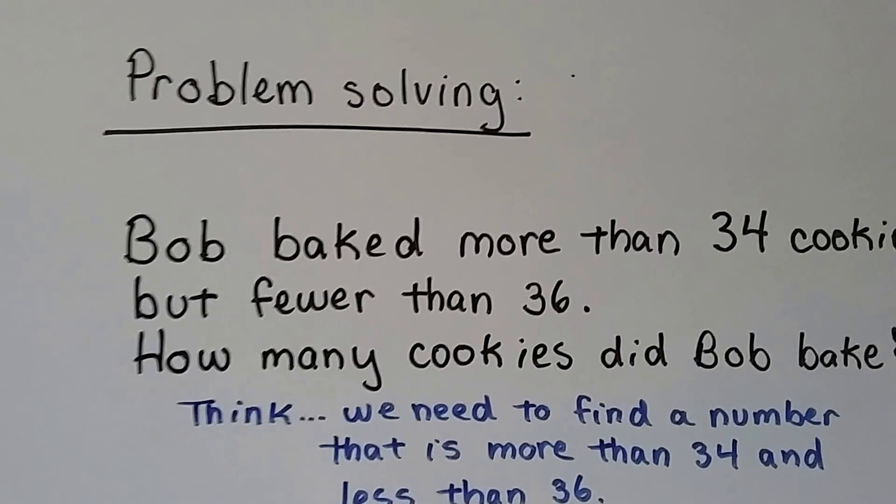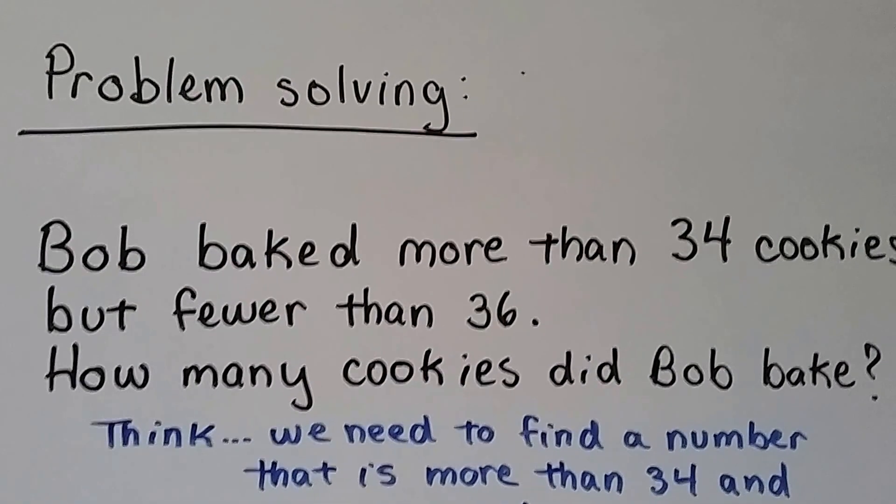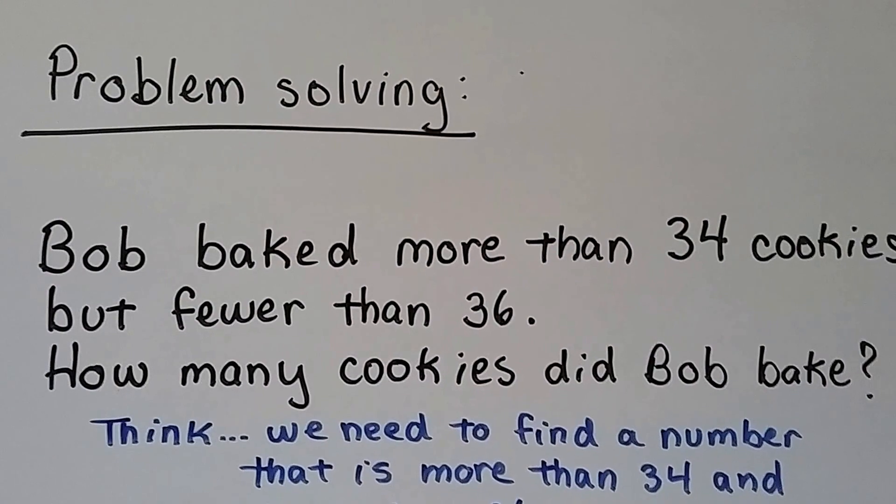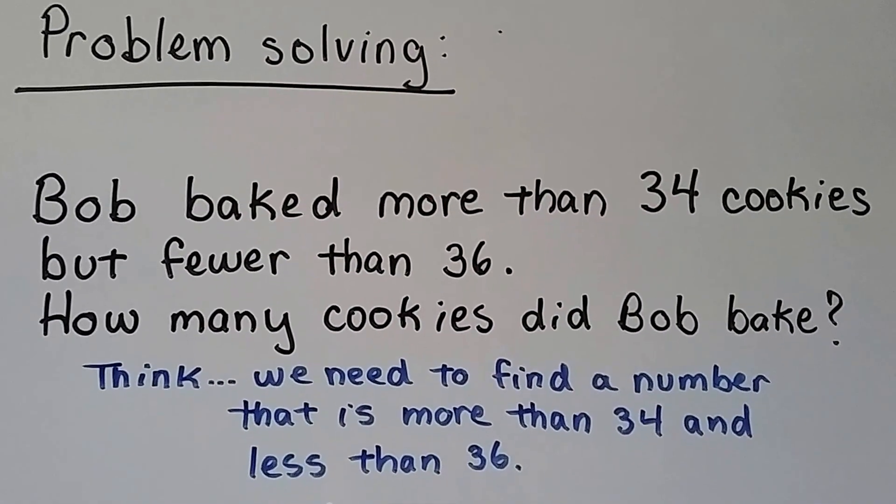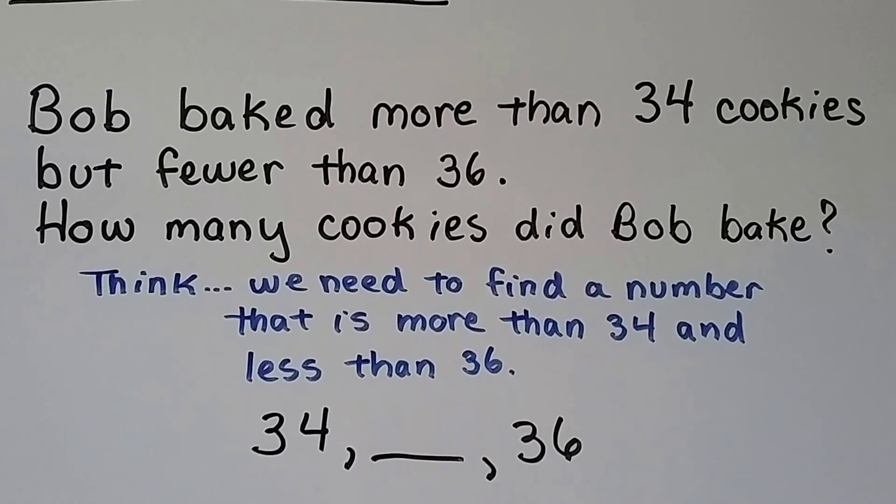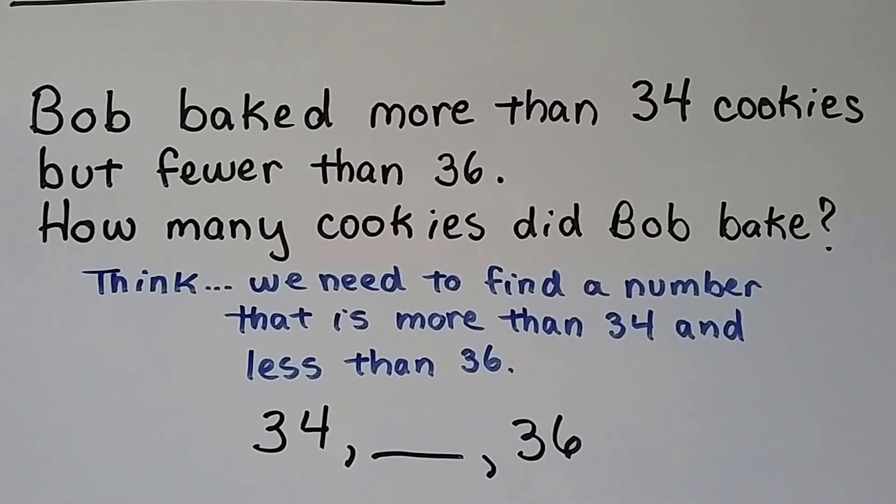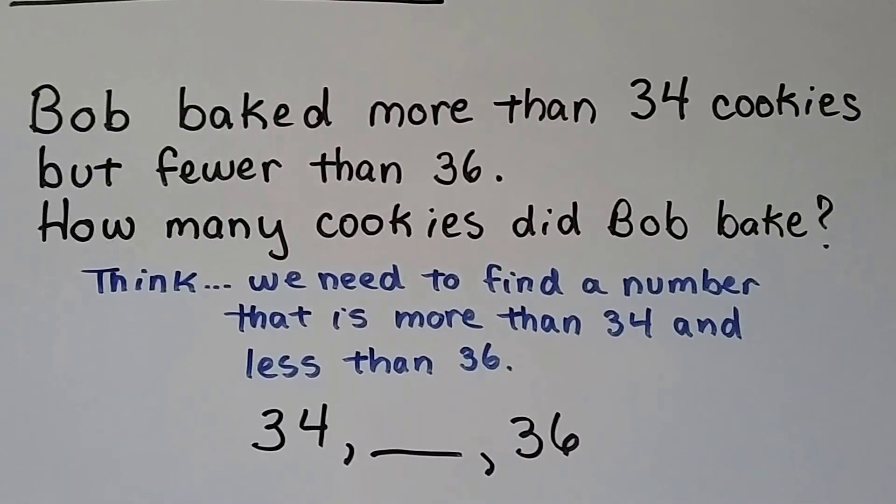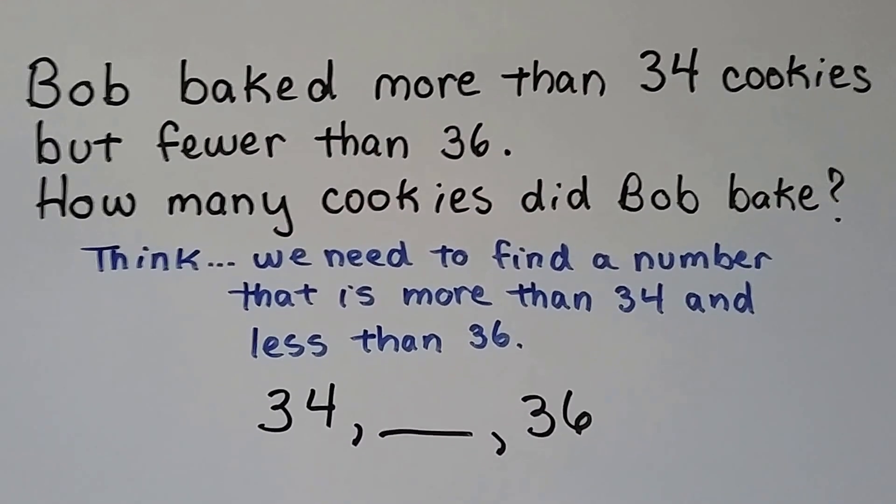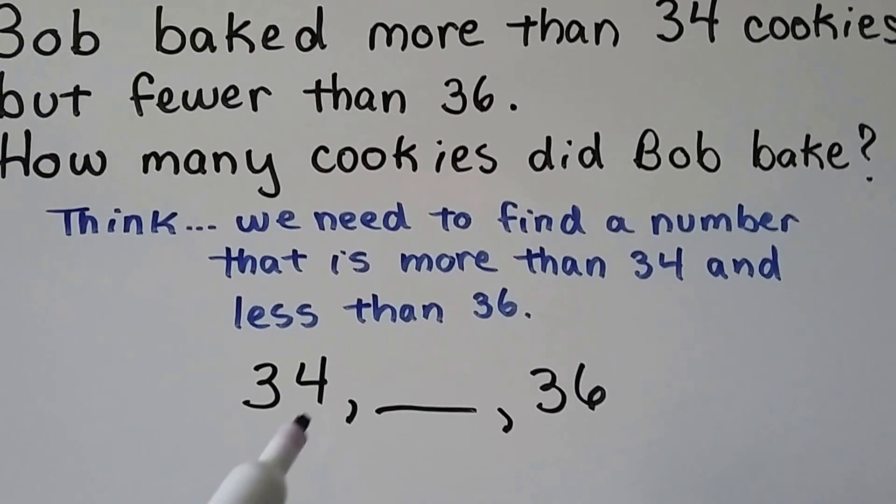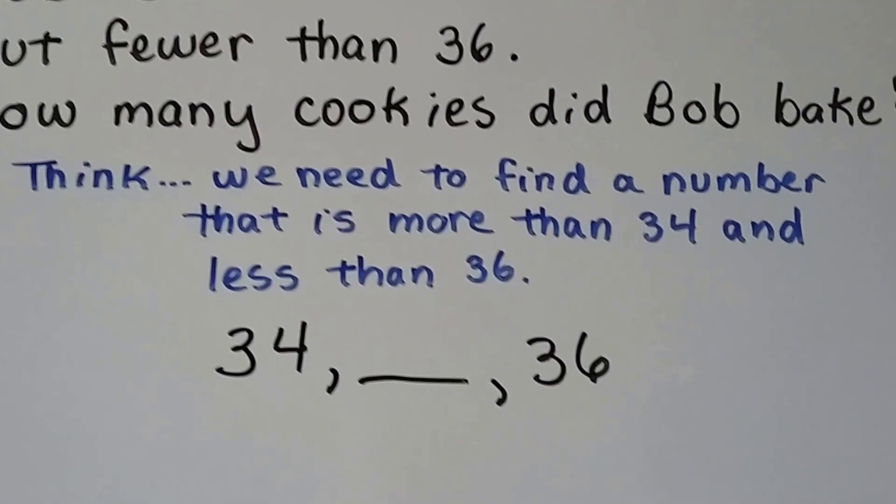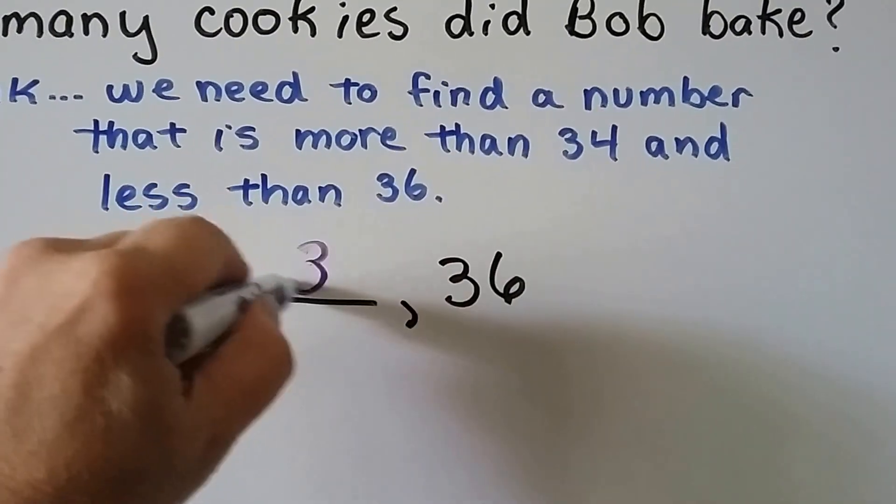Bob baked more than 34 cookies, but fewer than 36. So how many cookies did Bob bake? We need to find a number that is more than 34 and less than 36. It's going to come between 34 and 36. Can you figure out the missing number? This has four ones, this has six ones. If you said 35, you're right.